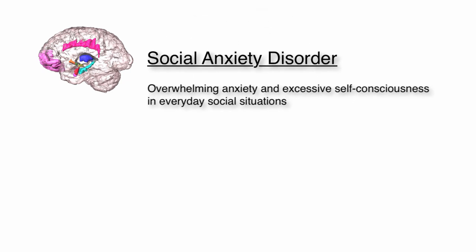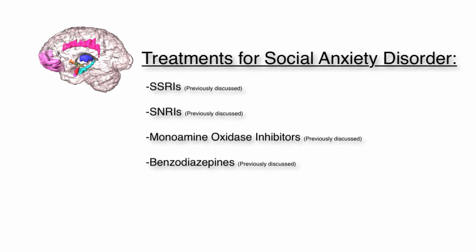The last anxiety disorder is called social anxiety disorder. It is characterized by overwhelming feelings of anxiety and excessive self-consciousness in everyday social situations. The medications for social anxiety disorder include SSRIs, SNRIs, MAOIs, and benzodiazepines. All of these drugs work to regulate the balance of hormones in the mesolimbic system so that the brain does not perceive feelings of anxiety and panic.